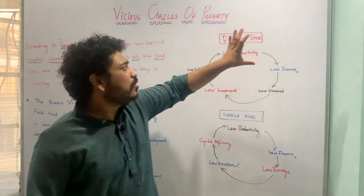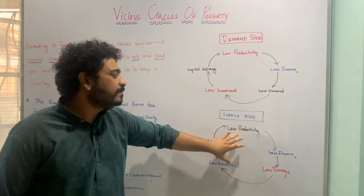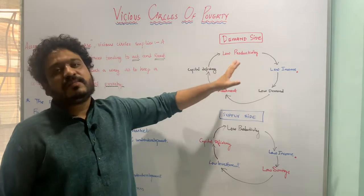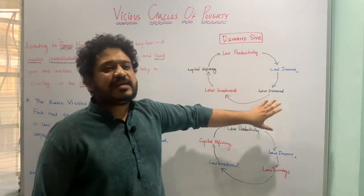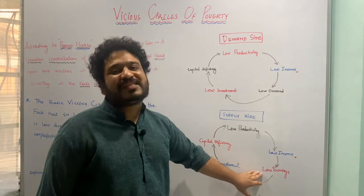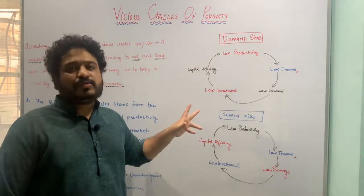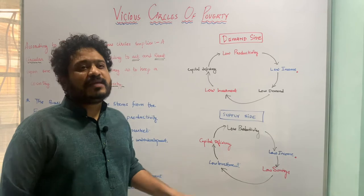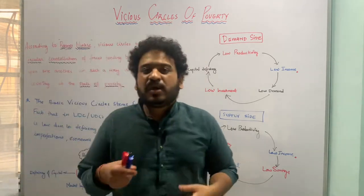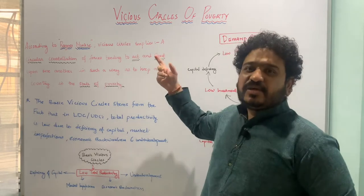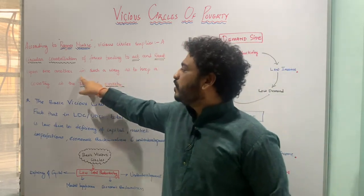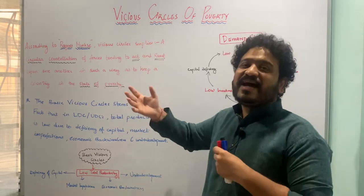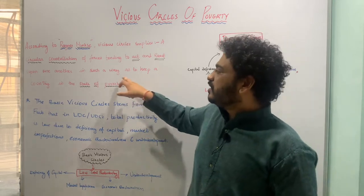So we can see that both on the demand side and the supply side, low real income is translated into low productivity — on the demand side through lower demand, and on the supply side through lower savings. These two circles operating simultaneously lead to the vicious circles of poverty, which, according to Ragnar Nurkse, represent a circular constellation of forces acting and reacting upon each other to keep a country in a state of poverty.